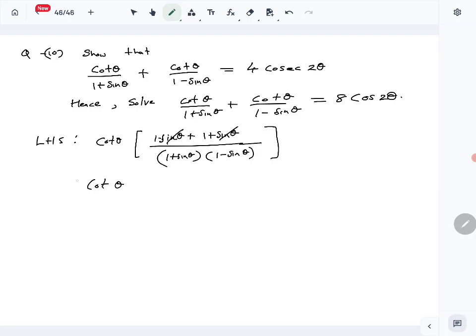On the bottom you have 1 minus sin squared theta. So that is 2 cot theta over... what is 1 minus sin squared? That is cos squared theta, right? So we need to show 4 cosec 2 theta.